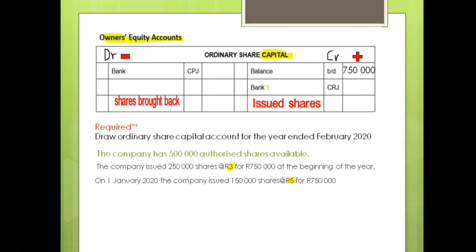We are going to record that transaction on the credit side as bank, because the public will pay and the company will receive money. So we record that 750,000 on the credit side.